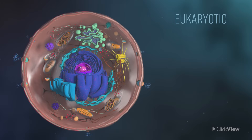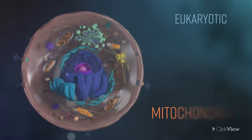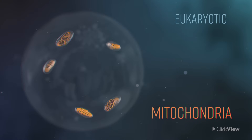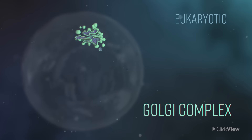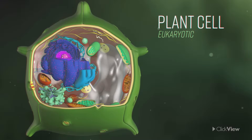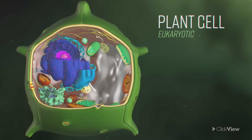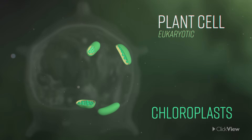Eukaryotic cells also have other large, complex, membrane-bound organelles, which prokaryotic cells lack. These include mitochondria, rough and smooth endoplasmic reticulum, the Golgi complex, and in the case of plant cells, chloroplasts.